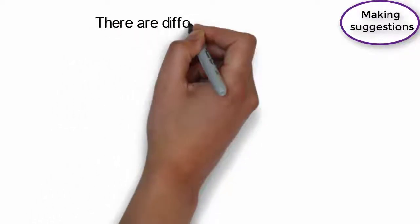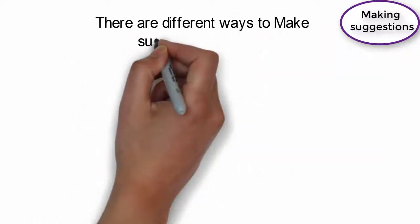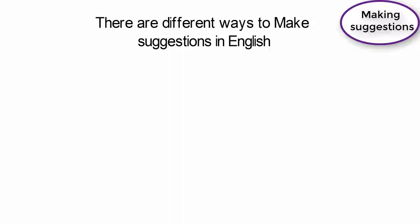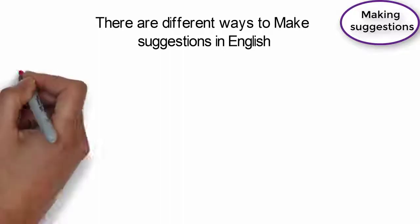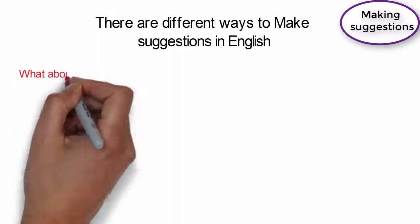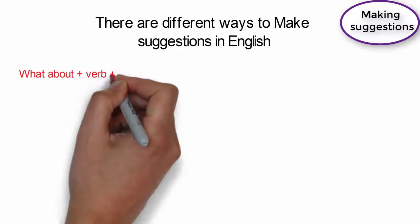There are different ways to make suggestions in English. For example, we can use: What about + verb + ing.